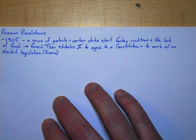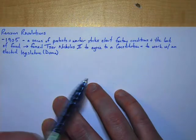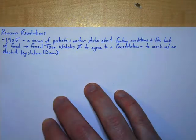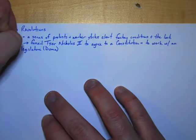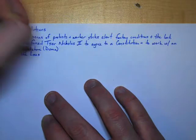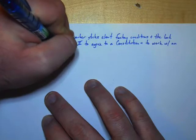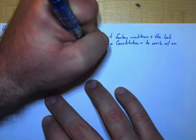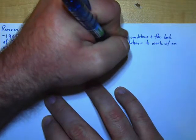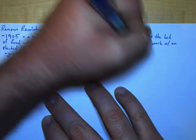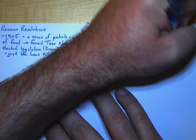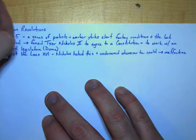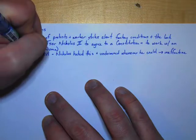This should sound familiar because this is more or less the same thing that happened during the initial stages of the French Revolution. King Louis XVI agreed to a constitution and to work with an elected legislature, just like the Tsar is doing here. Also, just like Louis XVI, Nicholas hated this and undermined it whenever he could.